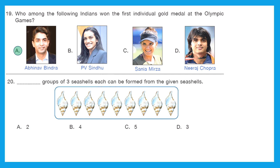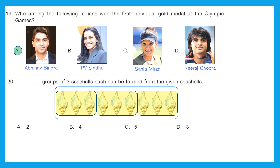Question 20: How many groups of three seashells each can be formed from the given seashells? We have to make groups of three seashells and count how many such groups can be formed. Counting them: first group, second group, and third group — we got three groups. The right answer is option D — three.